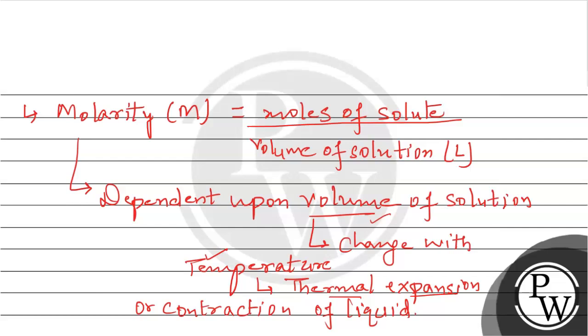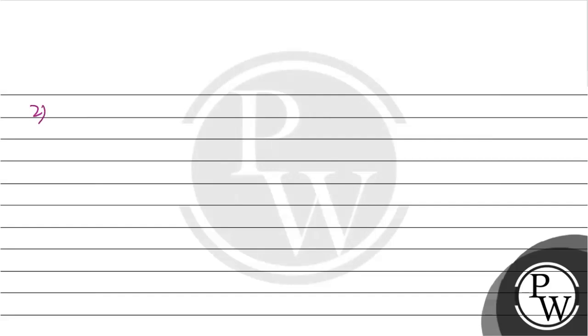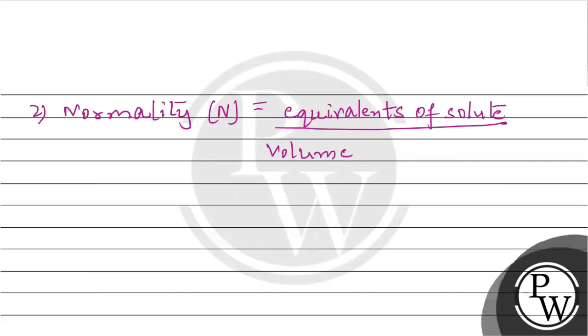Now let's discuss the second one, that is normality, which is denoted as capital N. Normality formula is equivalence of solute divided by the volume of solution in liters.